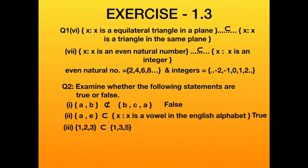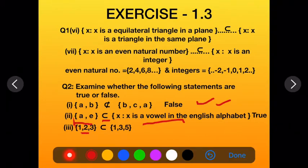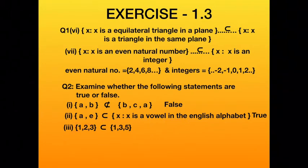Third part: {1, 2, 3} is a subset of {1, 3, 5}. Looking carefully, the first set contains 2 but the second set does not have 2. So not all elements of the first set are in the second set — it is not a subset. The statement given is incorrect. So this statement is false.